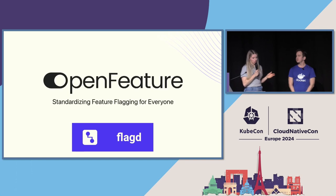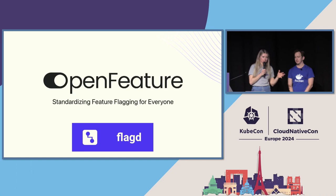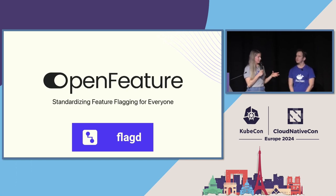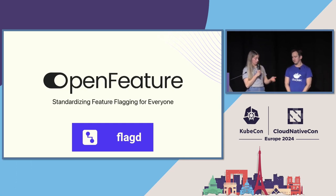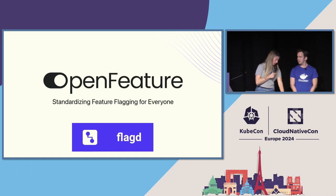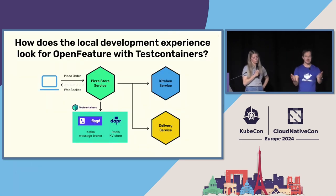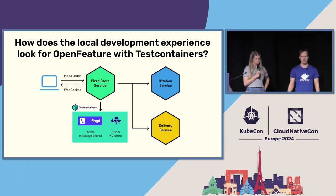We're going to release it properly behind a feature flag, and for this we're going to use OpenFeature. OpenFeature is an open source project that does standardization of feature flags — it allows you to use a standard API with any sort of implementation of a flag provider. In this case we're using FlagD, but it allows you to take advantage of really any different flag evaluation providers. In my local experience, I'm going to run FlagD in my TestContainers environment using TestContainers.